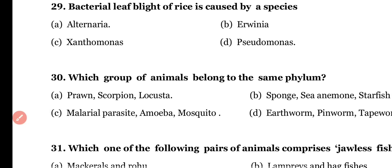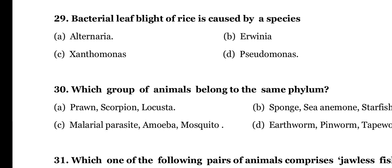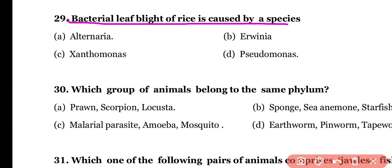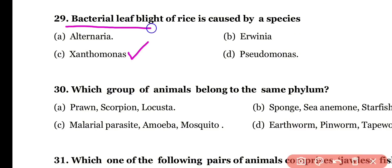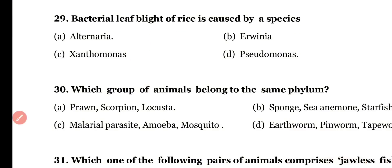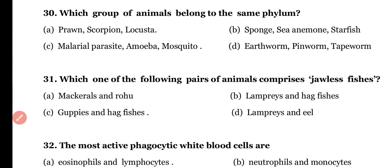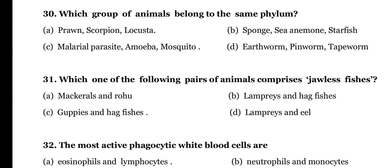Question number twenty-nine: bacterial leaf blight of rice is caused by (a) Alternaria, (b) Erwinia, (c) Xanthomonas, or (d) Pseudomonas. The correct answer is option C — bacterial leaf blight of rice is caused by Xanthomonas oryzae.